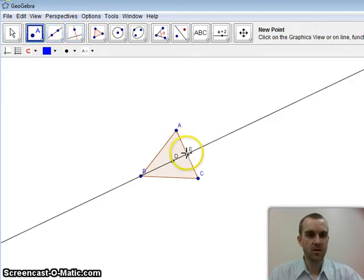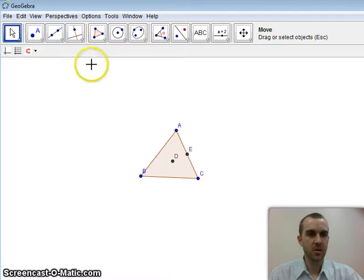And I'm going to put a point there at that intersection. Again I'm going to hide this line and get it out of the way.